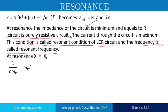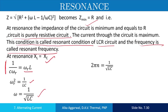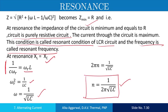To find the resonant frequency: at resonance XL equals XC, and XL equals omega L and XC equals 1 upon C omega, where omega R represents the resonant angular frequency. Rearranging, omega R² is equal to 1 upon LC, so omega R equals 1 upon root LC. Replacing omega by 2πf, the resonant frequency is f equals 1 upon 2π times root LC.